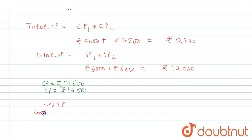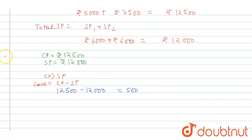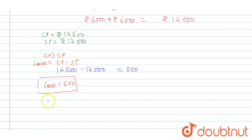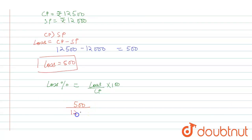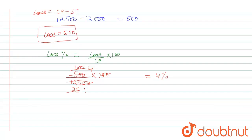Loss equals CP minus SP, so twelve thousand five hundred minus twelve thousand equals a loss of rupees five hundred. Loss percent equals loss upon CP into 100, so five hundred upon twelve thousand five hundred into 100 equals four percent. Therefore there is a loss of four percent on the whole transaction.